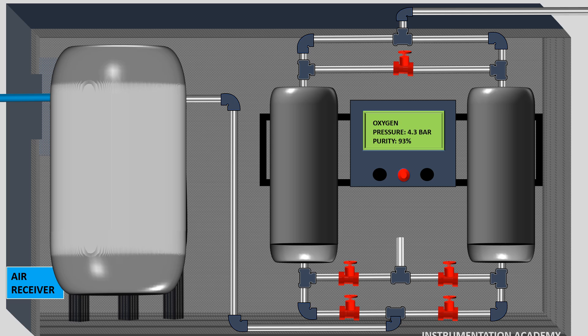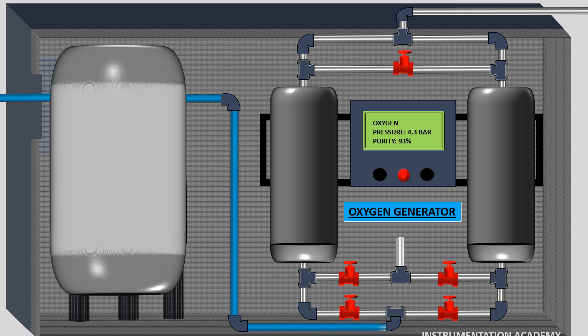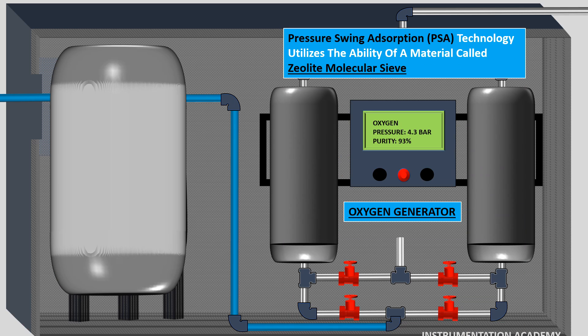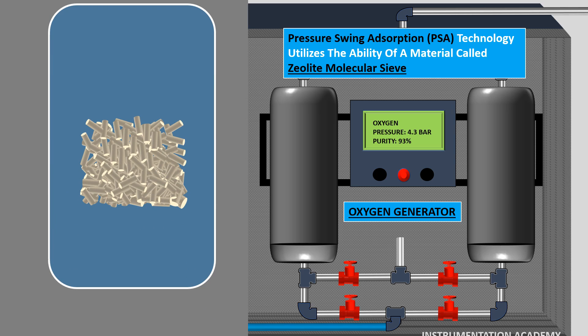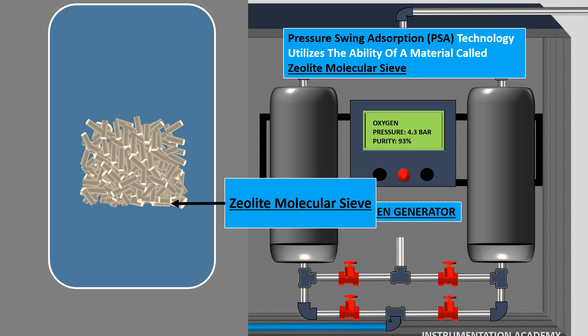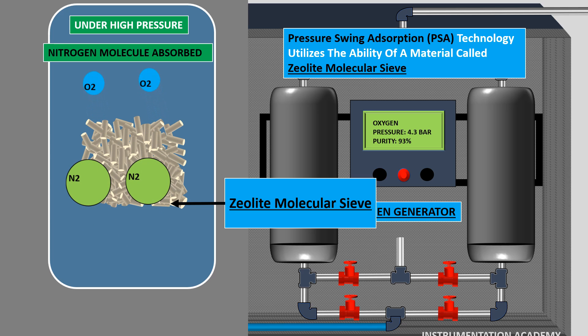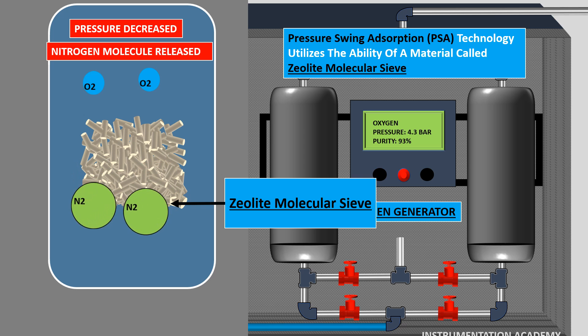Compressed air from the air receiver is now fed to oxygen generator. This oxygen generator works on the principle of pressure swing adsorption. This pressure swing adsorption technology utilizes the ability of a synthetic material called zeolite molecular sieve to absorb mainly nitrogen molecules from the air at high pressure and release this retained nitrogen molecules once the pressure within the generator is decreased.